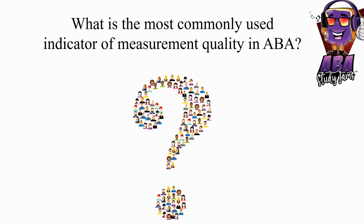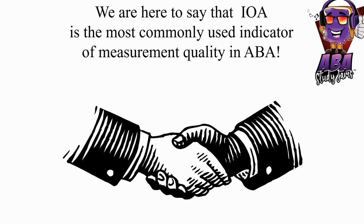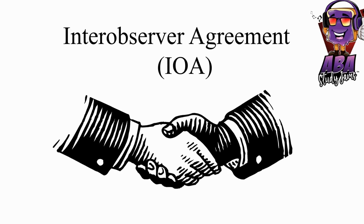What is the most commonly used indicator of measurement quality in ABA? IOA is the most commonly used indicator of measurement quality in ABA. Today will be a great day — you must learn about IOA to be an awesome BCBA.